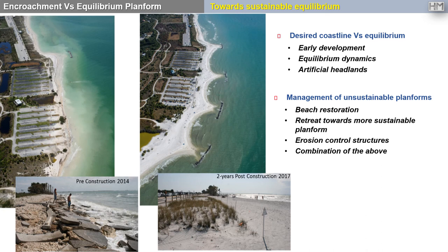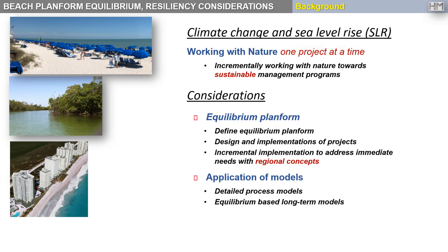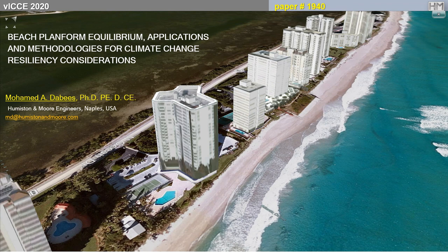Finally, as we try to achieve sustainable solutions, there will be instances where upland development will not be close to equilibrium planform. Management of these cases may require a combination of retreat, beach restoration, and strategic use of erosion control structures, or all of the above. In conclusion, as we consider the uncertainties of climate change, we need to follow an incremental approach and work with nature towards sustainable management of our coastal areas, and considerations of equilibrium dynamics within the time scale of a resiliency study is necessary. Equilibrium-based models can be a helpful tool in such efforts. Thank you for your interest, and if you have any questions you can email me and I'll be more than happy to address them.